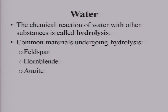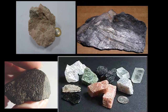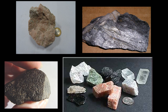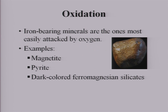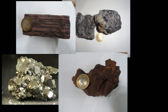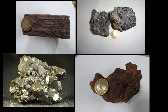The chemical reaction of water with other substances is called hydrolysis. Common materials undergoing hydrolysis are the feldspars, hornblende, and augite. Since oxygen is present in the atmosphere, oxidation can also take place — it is the process in which oxygen chemically combines with another substance, resulting in the formation of an entirely different substance. You must be familiar that certain iron minerals get rusted when exposed to the atmosphere. Good examples are magnetite, pyrite, and dark-colored ferromagnesian minerals.